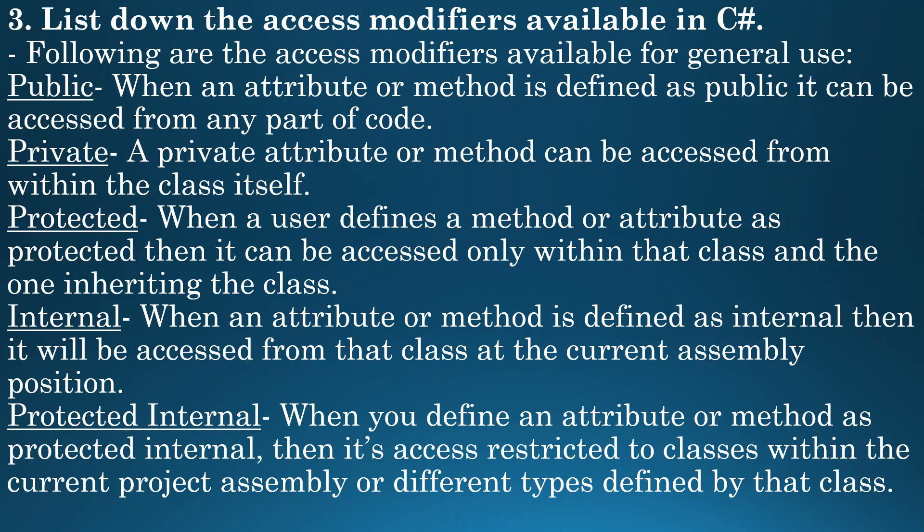Next is protected — when a user defines a method or attribute as protected, it can be accessed only within that class and the one inheriting the class. Next is internal — when an attribute or method is defined as internal, it will be accessed from their class at the current assembly position.